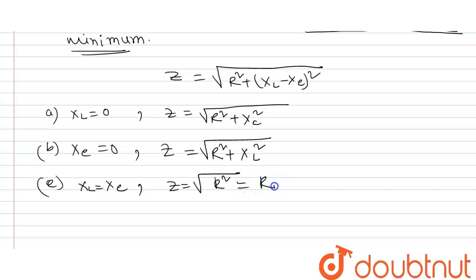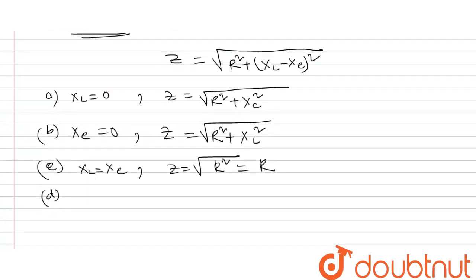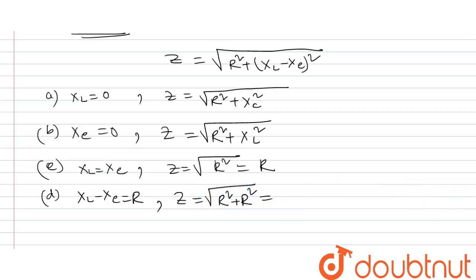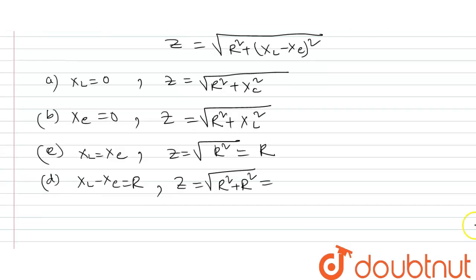So Z is equal to R. Now we check option D: XL minus XC is equal to R. So Z equals √(R² + R²) = √(2R²) = R√2. That means the impedance in option D is R√2, which is greater than R.